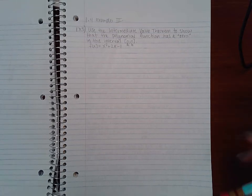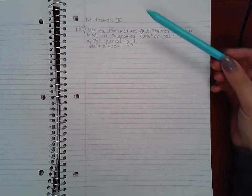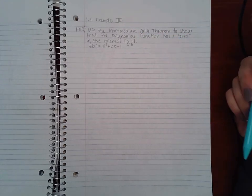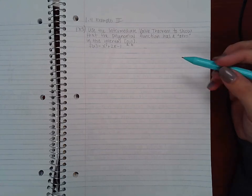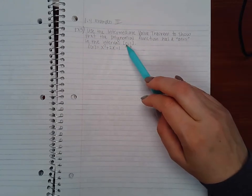In this video we will cover section 1.4 Continuity and One-Sided Limits, examples part three. This problem says use the Intermediate Value Theorem to show that the polynomial function has a zero in the interval [0,1].